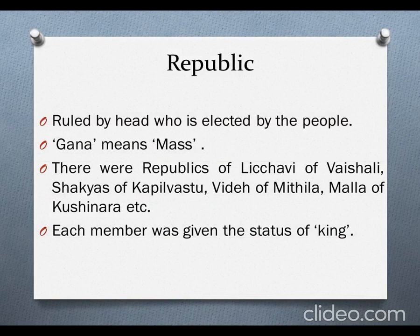Now students, there were two types of state systems during that time. We studied the first type - monarchy, where there is a king. Today we will study about Republic. Republic is a system where a group of elected members, chosen as representatives, rule the region. India is a Republic country. Republic is a state directly or indirectly ruled by a head who is elected by the people.